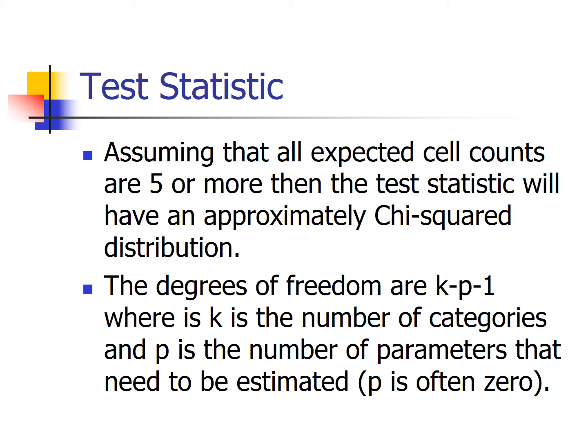The degrees of freedom are k minus p minus 1, where k is the number of categories and p is the number of parameters estimated. p is often zero. Example one: a teacher writes an exam and expects 10% A's, 20% B's, 40% C's, 20% D's, and 10% F's. She gives the test to a class of 100 students and compares sample proportions to assumed population proportions. The test statistic follows chi-squared with five minus zero minus one equals four degrees of freedom.